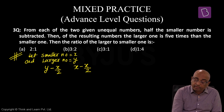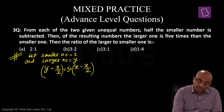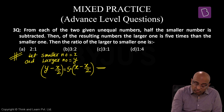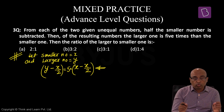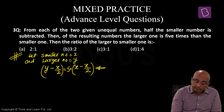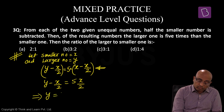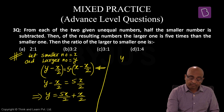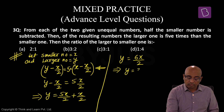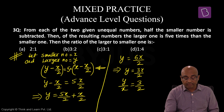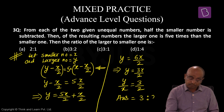After subtraction, larger number is Y minus X by 2 and smaller is X minus X by 2. The larger is 5 times the smaller: Y minus X by 2 = 5 into X by 2. So Y = 5X by 2 plus X by 2 = 6X by 2 = 3X. Therefore Y by X = 3 by 2. Larger to smaller = 3 is to 2। That is option B।